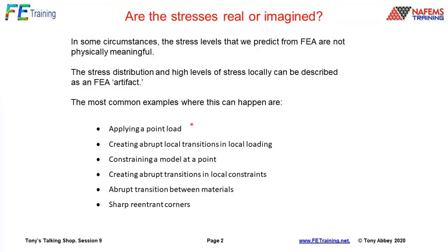If we constrain the end fully, we lock out the ability for that end to shrink under Poisson's ratio effect. The two corner nodes laterally will actually become point constraints and will generate singularities. That's one that often catches people out, because we don't think we're applying a constraint at a point, but the load transfer at the reaction point is just through a point.